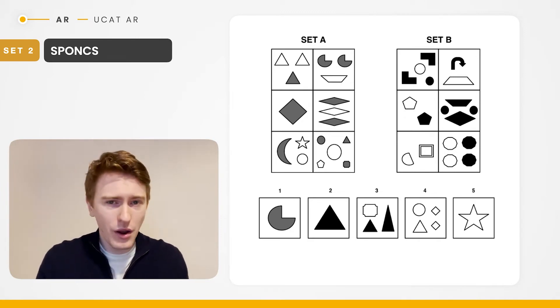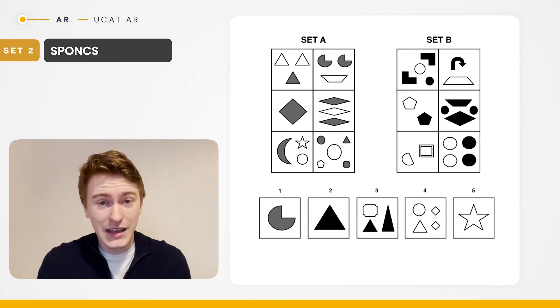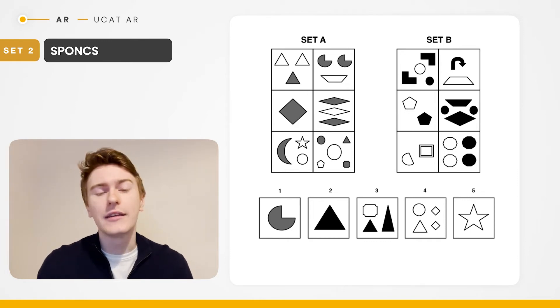O, orientation. Well a lot of these shapes are things like triangles, equilateral triangles, which frankly their orientation doesn't really matter too much. So orientation is out the window again. Number.